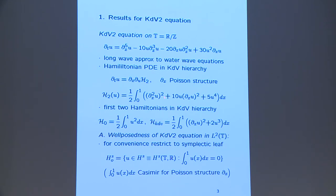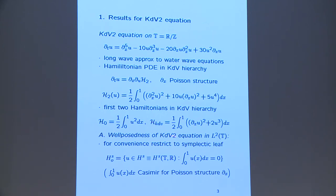It can be written in a Hamiltonian way: d/dt u equals d/dx, the L2 gradient of the Hamiltonian H2. The KdV2 Hamiltonian involves the L2 norm of the second derivative of U. So H2 is well defined on the Sobolev space H2 and has some nonlinear parts. d/dx is the Poisson structure introduced by Gardner. This is the second Hamiltonian in the KdV hierarchy; H0 is the L2 norm and the first one is the famous KdV Hamiltonian.